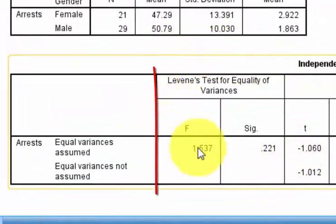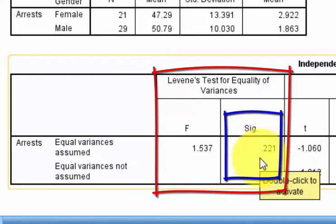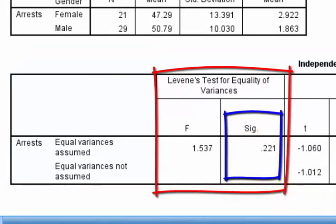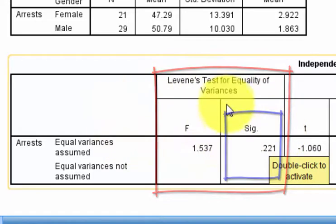For the t-test, look at the Levine's test. If the sig value, p-value, was less than 0.05, then you violated that assumption. Let me say that again. If the sig value for the Levine's test of homogeneity of variance is less than 0.05, then you have violated that assumption. This is greater than 0.05, so the variances were relatively the same. That's what you're looking for.